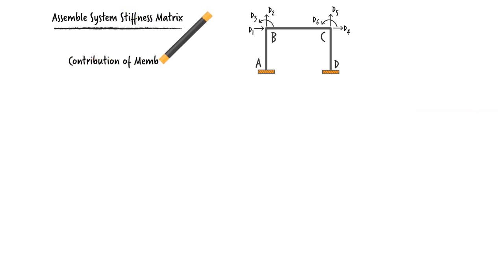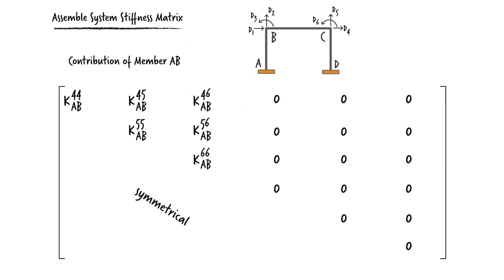Here is the contribution of AB to stiffness of the entire frame. The member adds to the system stiffness in directions 1, 2, and 3 only. Why? Because only these three directions are associated with the member. Directions 4, 5, and 6, placed at joint C, are not located on AB.